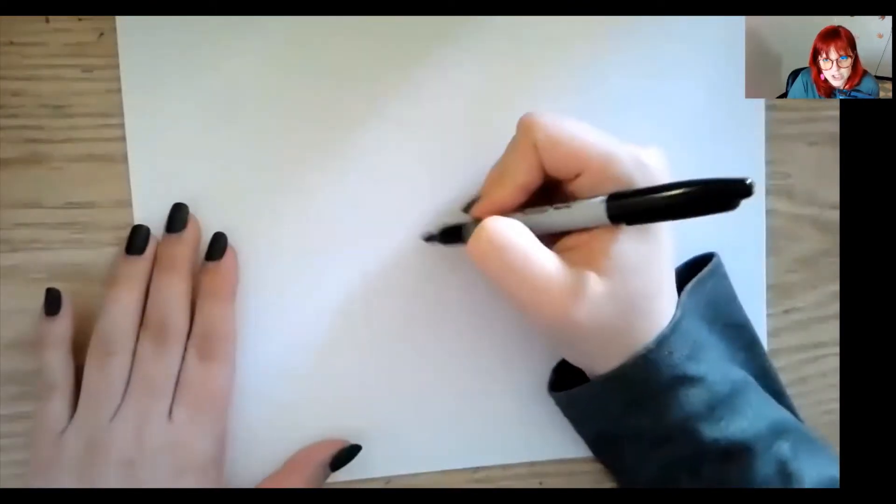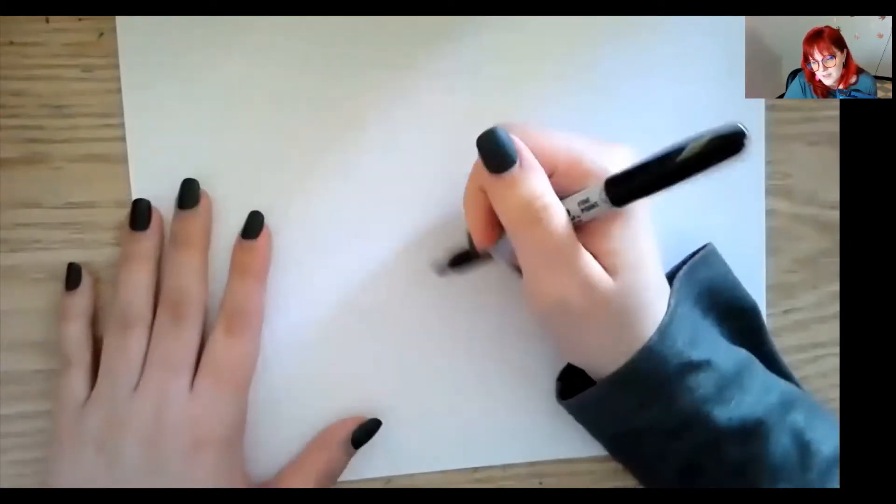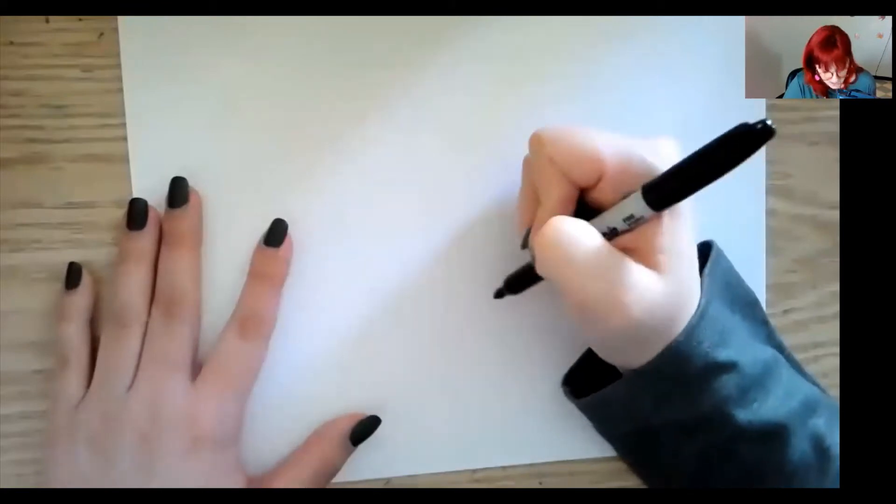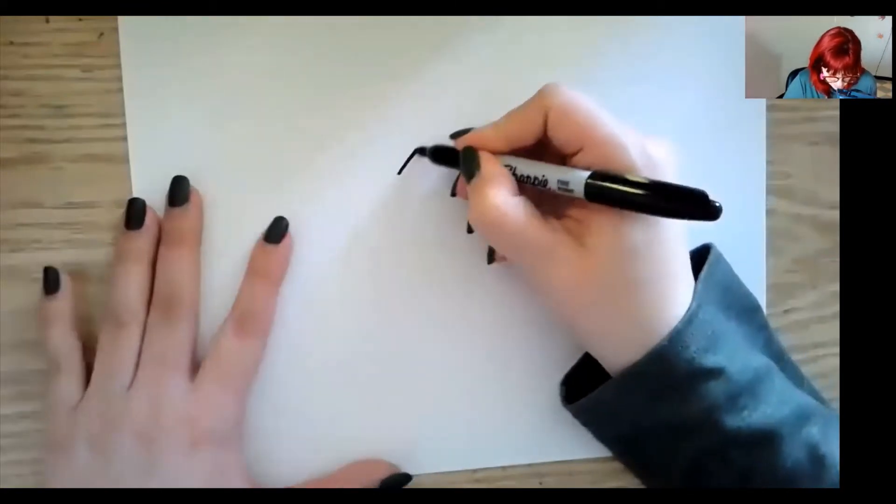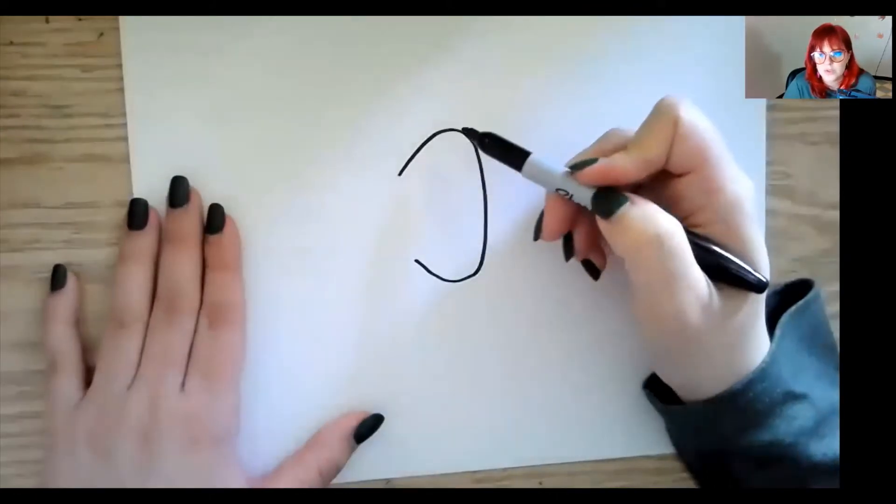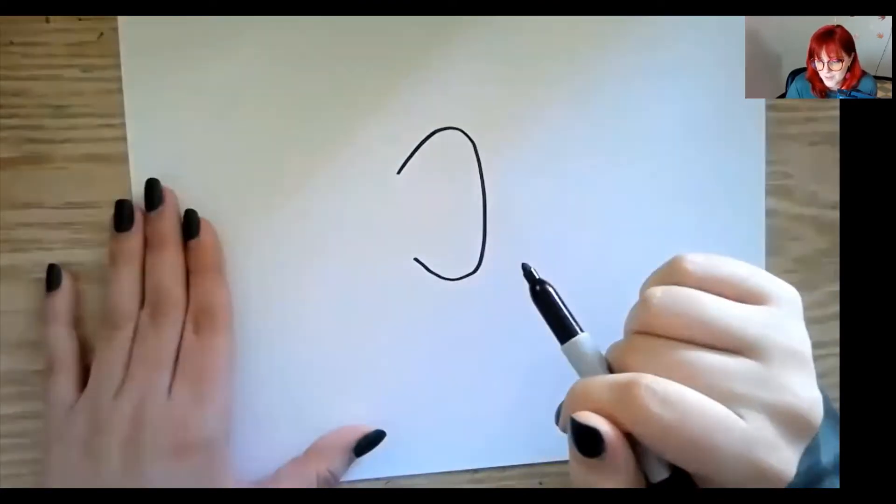So the first thing we're going to do is start with a large shape right here in the middle that is going to be the ear. And the ear is going to be a shape that's almost like a backwards C. Kind of like that. It's alright if yours comes to a point or if yours is a little bit more rounded. It does not have to look exactly like mine.